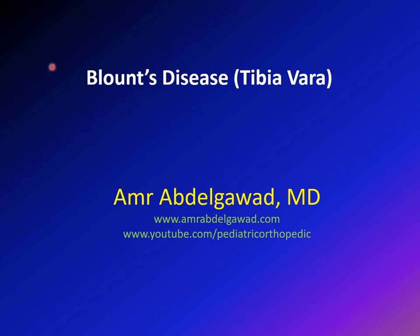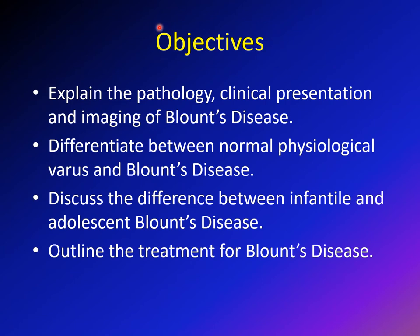In this lecture, we're going to speak about Blount disease, or tibia vera. The objectives are to cover the pathology, clinical presentation, signs and symptoms, and x-ray pictures of Blount disease. We'll also discuss how to differentiate between Blount disease and normal physiologic varus, which happens in most kids, and then cover the two types — infantile and adolescent — along with an outline of treatment.